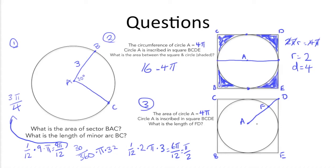Last up, we have number 3. The area of circle A is 4 pi. Circle A is inscribed in square BCDE, like the previous question. What is the length of FD? FD being right here. So again, the circle is inscribed in the square, which means that it has 4 tangent points.